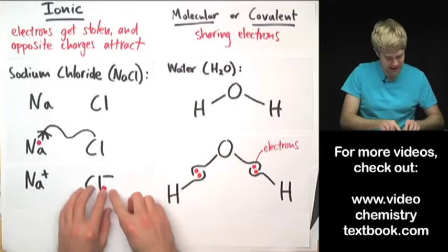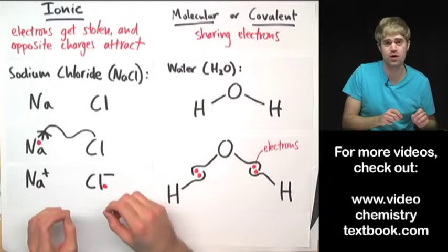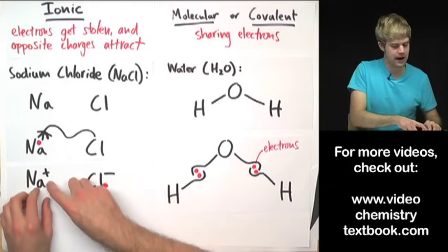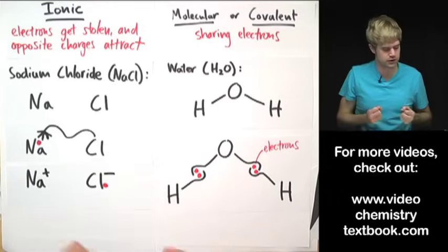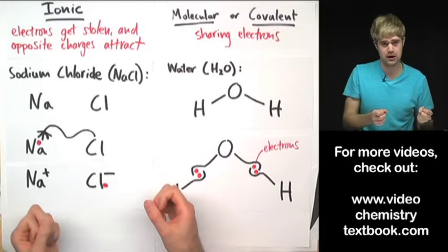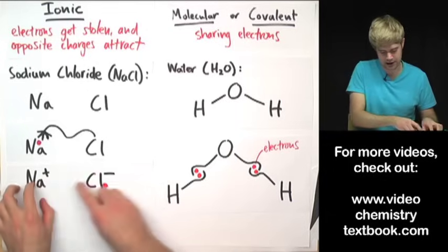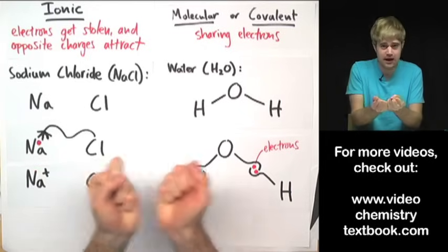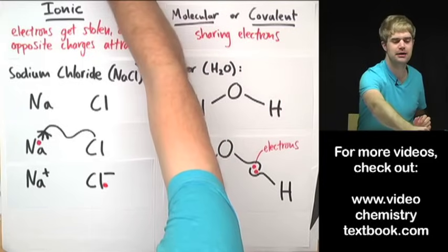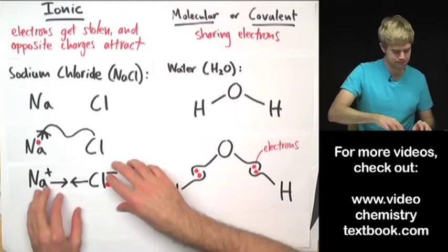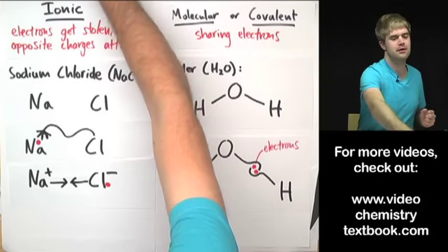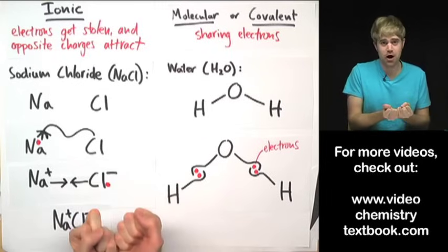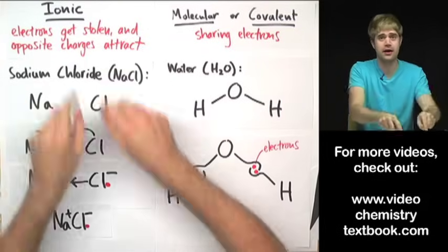So now chlorine has an extra electron and sodium has lost one of its electrons. This causes chlorine to now get a negative charge because it has a new electron. And sodium, because it had one of its electrons stolen, now it has a positive charge. So now we have a positively charged ion here and another negatively charged ion here. What do opposite charged things like to do? They like to come together. They stick together. They're attracted to each other just like magnets. So now we have a positively charged thing and a negatively charged thing. These arrows show how they're going to come together, and we end up with the two atoms stuck together because they're oppositely charged, and that's what holds ionic compounds together.